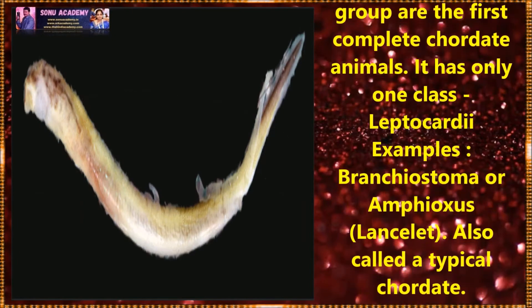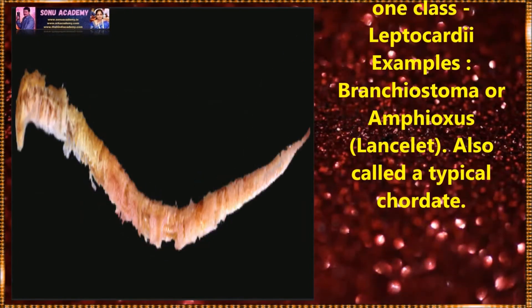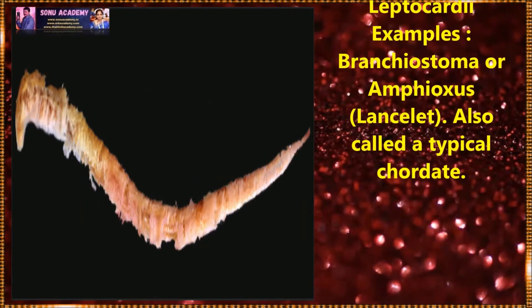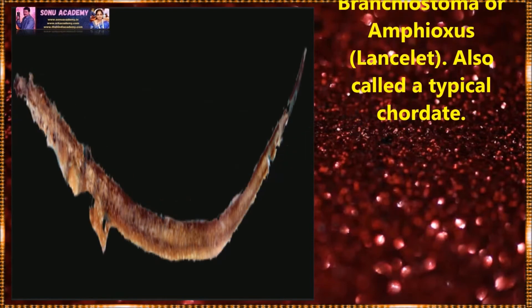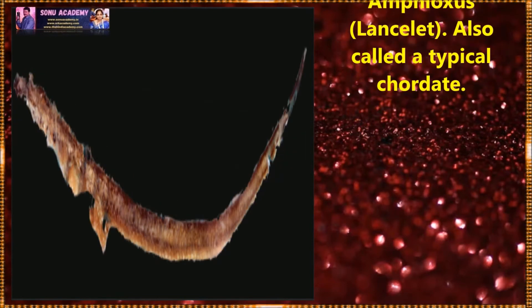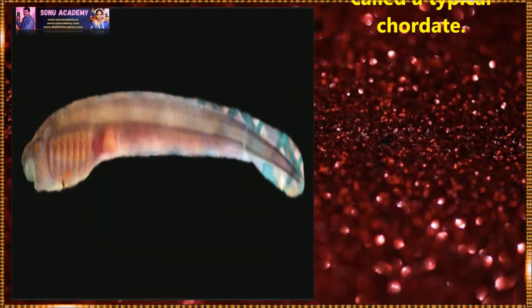It has only one class: Leptocardiae. Examples include Branchiostoma and lancelet, which are also called atypical chordates.